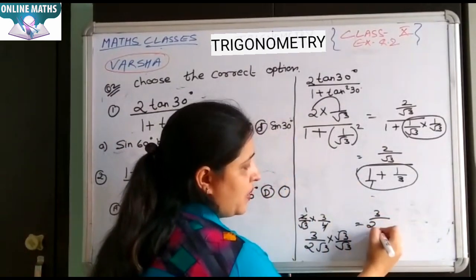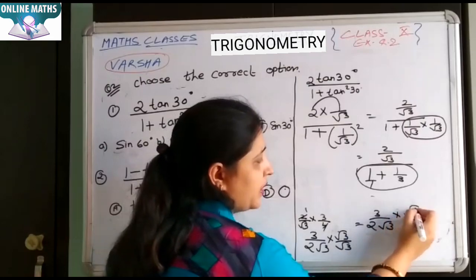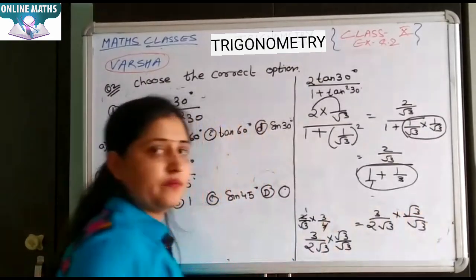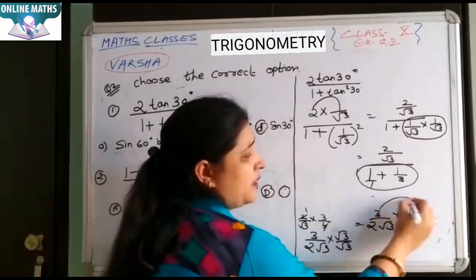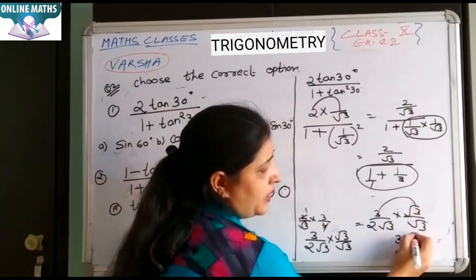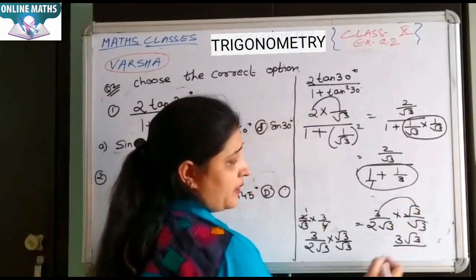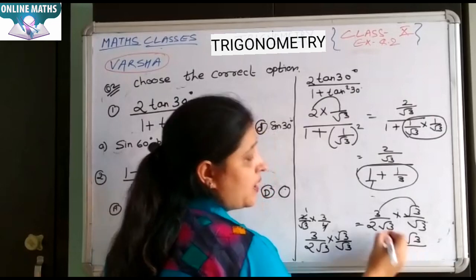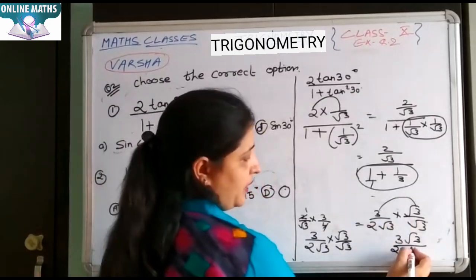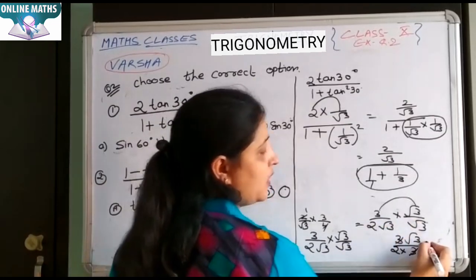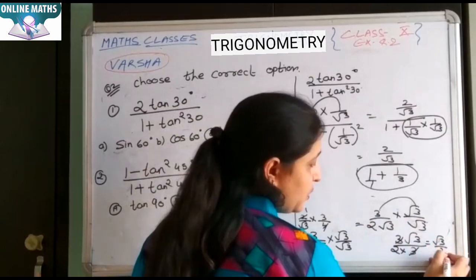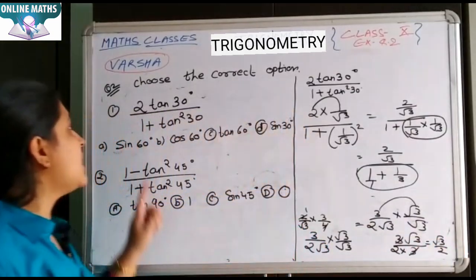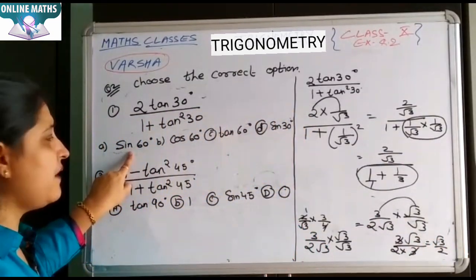3 upon 2 under root 3 into root 3 by root 3. 3 into root 3 is 3 root 3. Next step, 2 into root 3 into root 3. It means 3 se 3 cancel ho gaya. Or root 3 by 2. Aap isko next step.